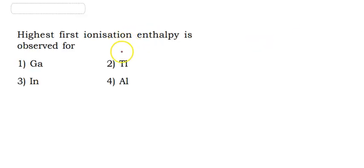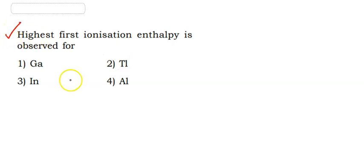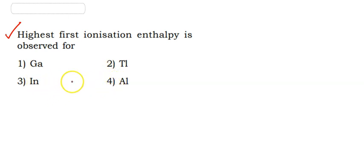First question. Trending topics like atomic radius and ionization enthalpy are very important. The first ionization enthalpy question has four options: Gallium, Thallium, Aluminium, and Indium. We will check the order. This is the 13th group.